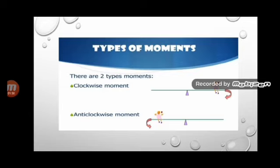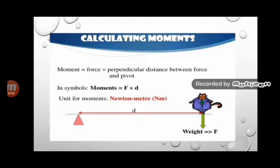Moment is calculated by the formula: force × perpendicular distance between the force and the pivot. The pivot is the point from which the force is applied. In symbols, moment = F × D. The unit of moment is Newton meter.